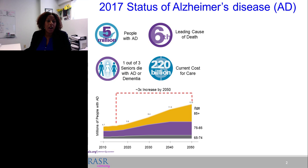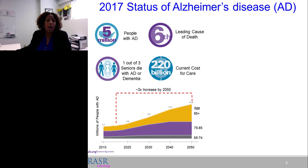Looking at demographics over the next 30 years, that number of five million sufferers will increase by a factor of three, to approximately 15 million by 2050. One in three seniors die from Alzheimer's or related dementia. Because there is no current cure, it's very expensive to treat — currently estimated at $220 billion, a figure that will rise into the trillions by 2050.